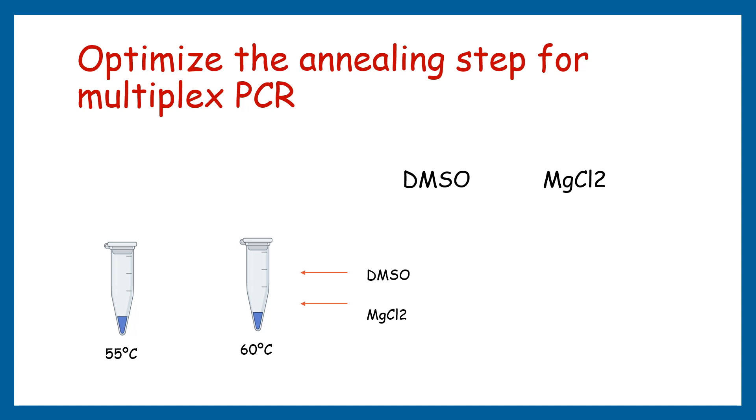Now coming to how we can optimize the annealing step for multiplex PCR, it's quite tough because every template has a different temperature for annealing and that might not be covered in the PCR gradient. So what can we do? We can manipulate the reaction using reagents such as DMSO or MgCl2.